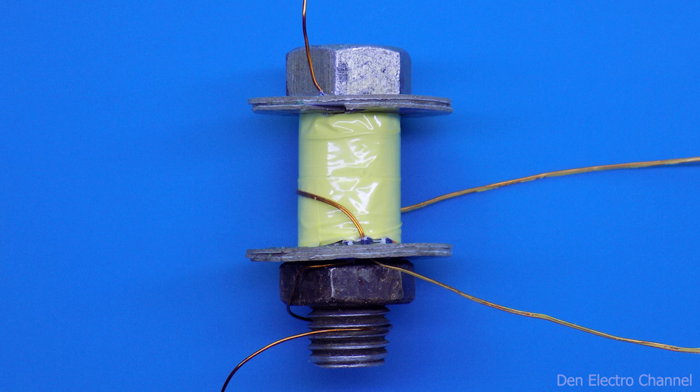Next comes the transistor control winding. For it I will use a double wire with a diameter of 0.2 millimeters.